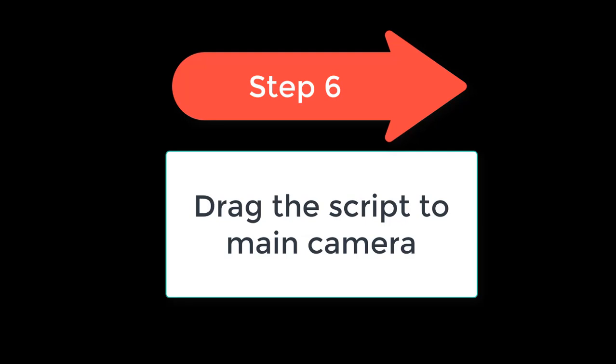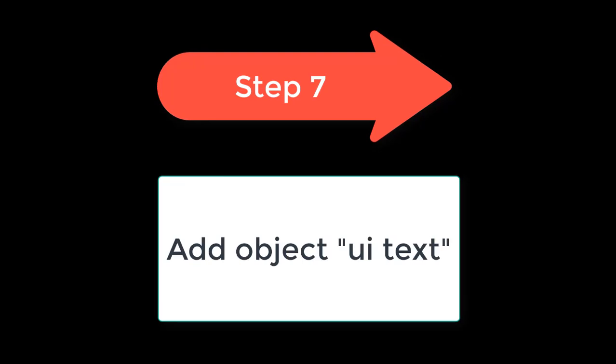Step 6: Drag the script to the Camera, or you can attach it to a manager object — whatever you prefer. Step 7: Add the objects. After adding the script, drag the UI Text objects into the script's exposed fields.